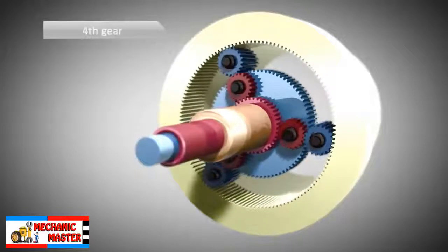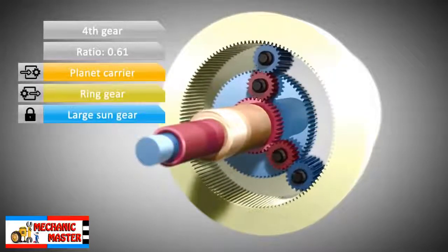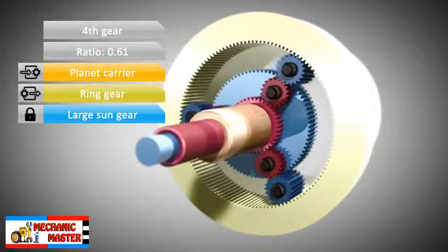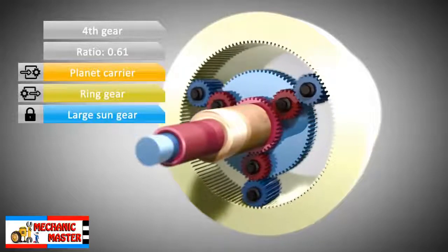In fourth gear, the planet carrier is the input. The large sun is held stationary and, again, the ring gear drives the wheels of the car.